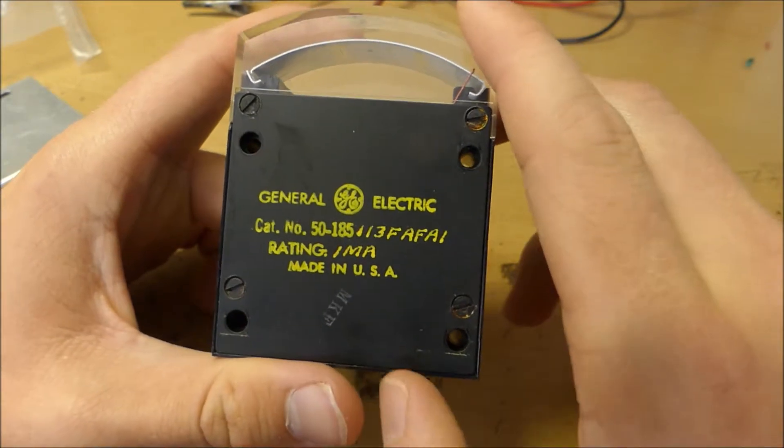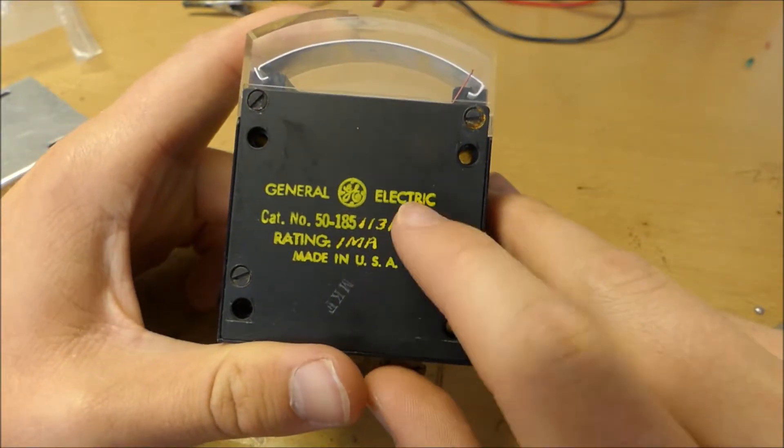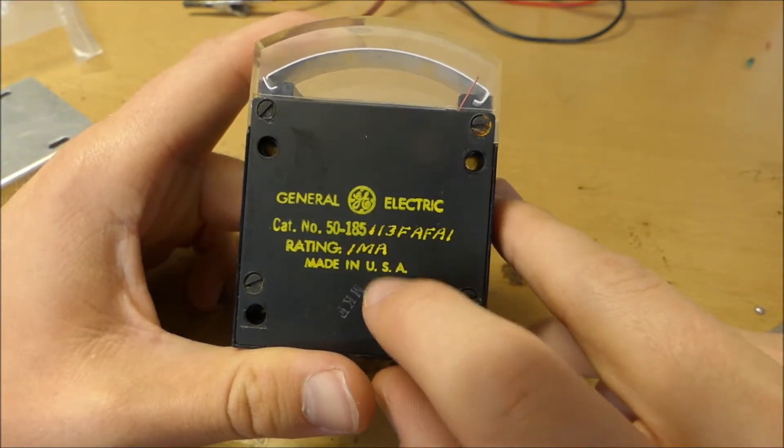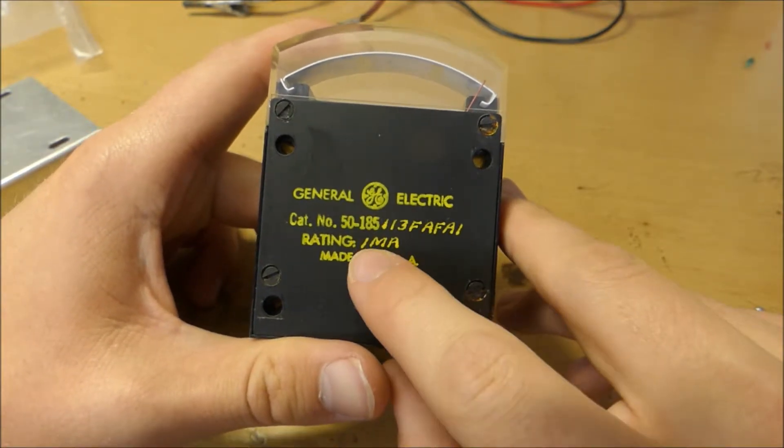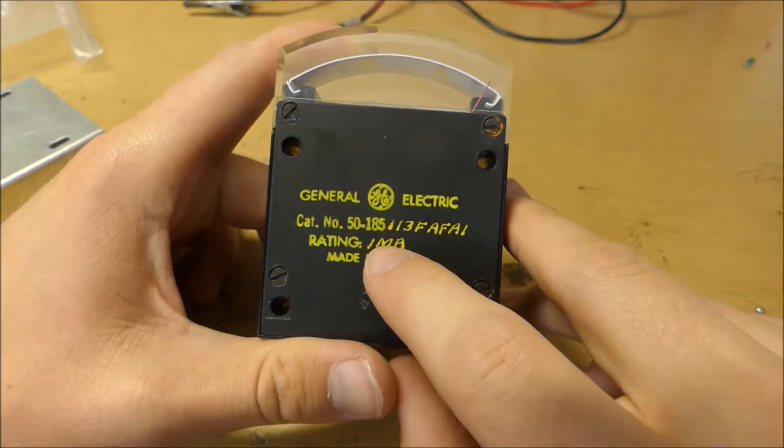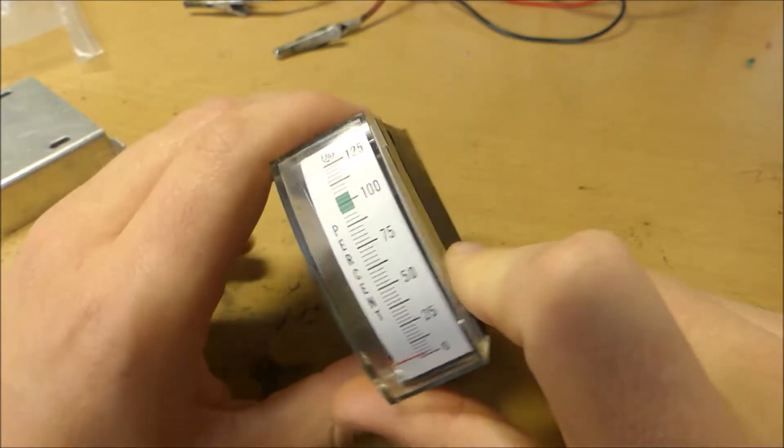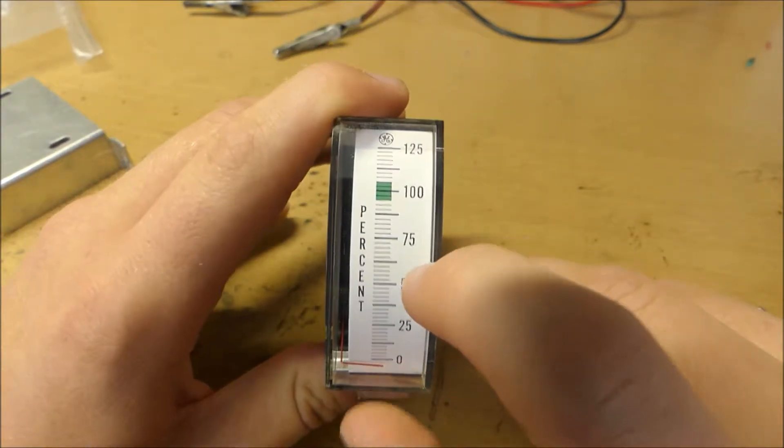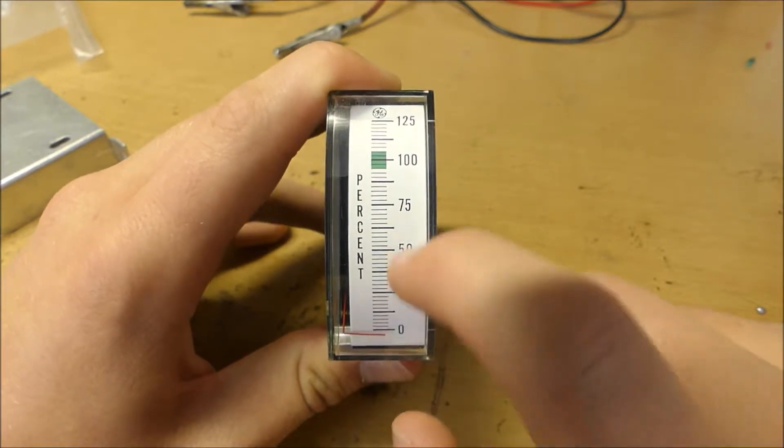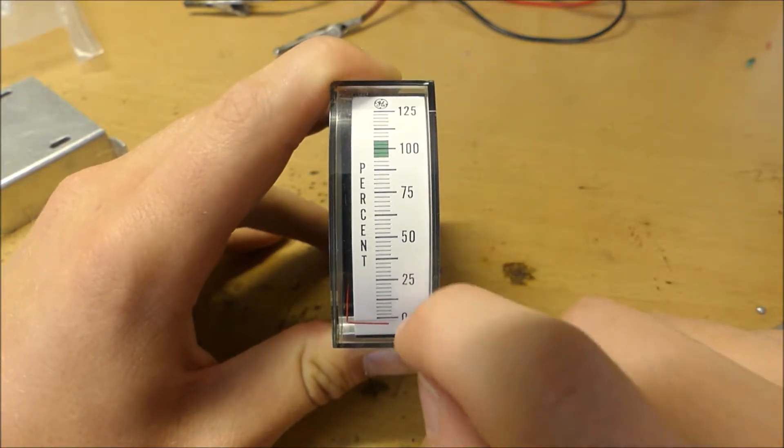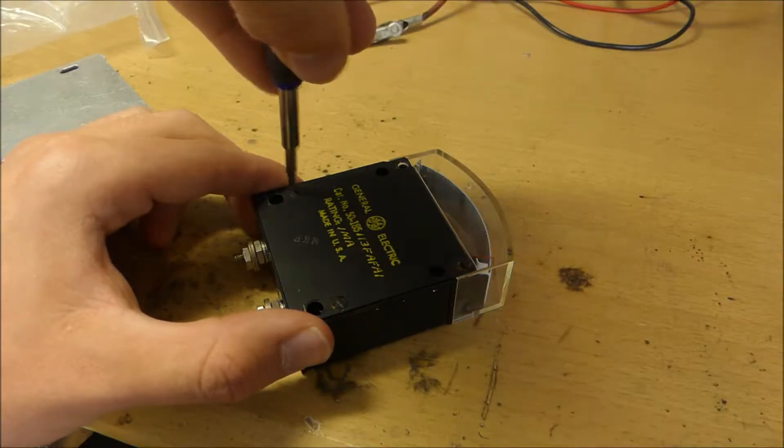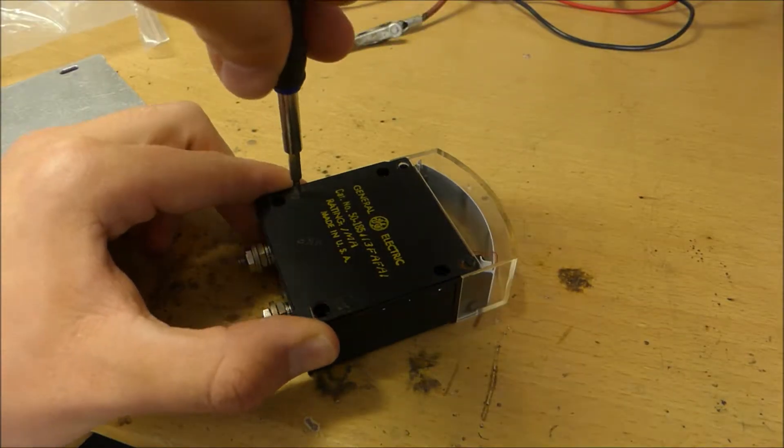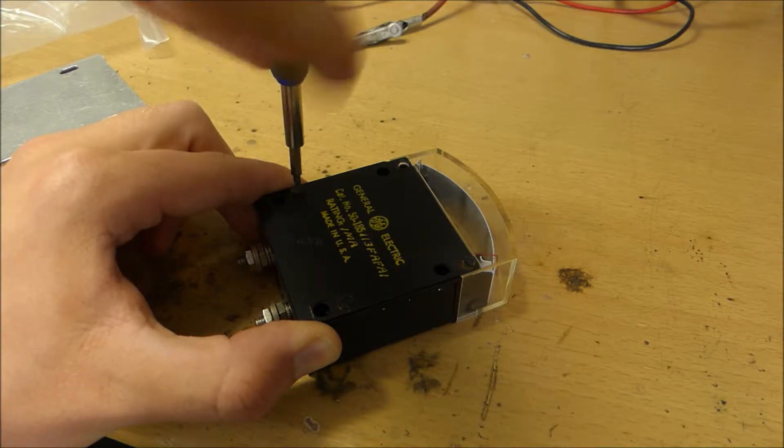It's interesting - on here we can see that this was made by General Electric. It has its catalog number, of course it's made in the USA when things used to be made in the USA. It's rated at 1 milliamp, so I assume that when 1 milliamp of current flows through this meter, then it will go all the way up to its max scale. So between 0 and 125 is between 0 and 1 milliamps. Let's see if we can take a peek inside this meter to more fully understand what is inside it and how it works.